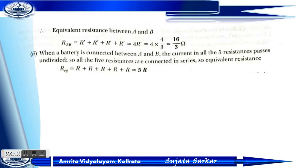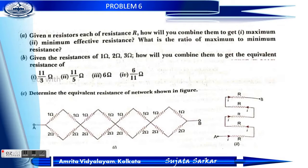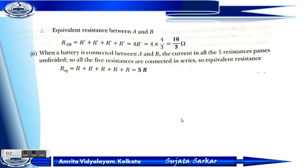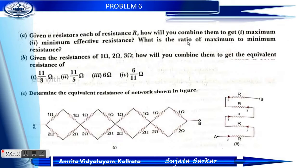Since the network has 4 such sections, we multiply by 4, giving the total equivalent resistance as 16/3 ohm.